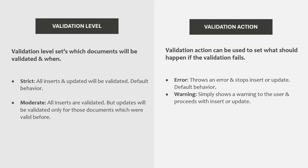You can also set validation level to moderate. When you set validation level to moderate, all inserts are validated, but updates will be validated only for those documents which were valid before. In moderate mode, if you already have some documents in the collection which are invalid and were created before you added the schema validation, those documents can still be updated with invalid data — the validation will not be performed on them. But documents added after setting up the schema validation will still be validated.